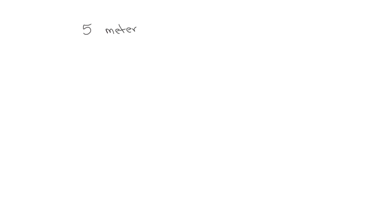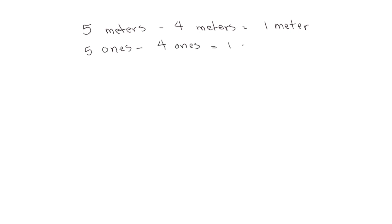Let's look at a simple subtraction problem: 5 meters minus 4 meters equals 1 meter. We could say this subtraction is in unit form, as we're specifying the meters. The same way we could say 5 ones minus 4 ones equals 1 one. Or if we're talking about fractional units, 5 sixths minus 4 sixths equals 1 sixth. So all of those are written in unit form.